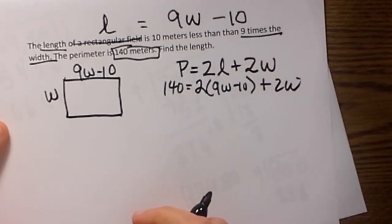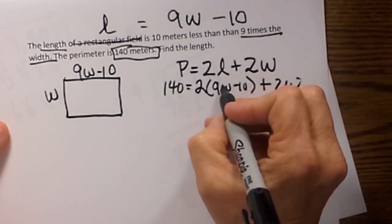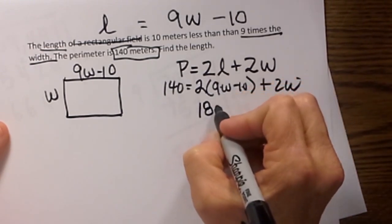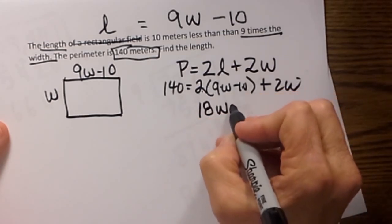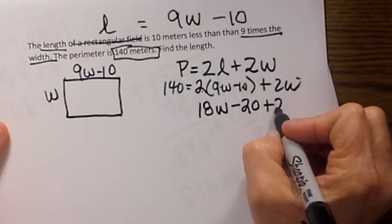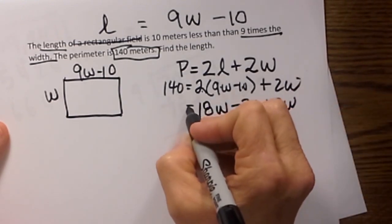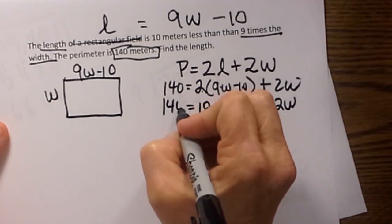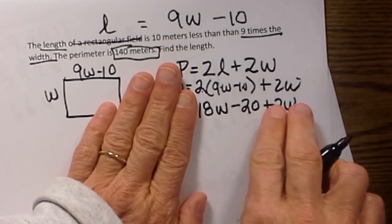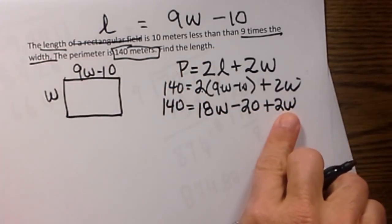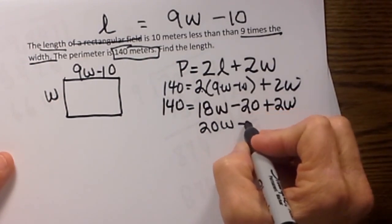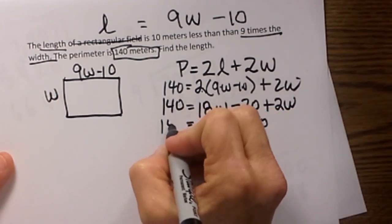And let's simplify this so we can solve it. So I am going to distribute this 2 into my parenthesis. So 2 times 9 is 18W. 2 times negative 10 is negative 20. Then I am just going to bring down my 2W and I am going to bring down my 140. Now let's add our like terms. So on the right side we can add 18W and 2W to get 20W. Then we bring down the minus 20 and the 140.